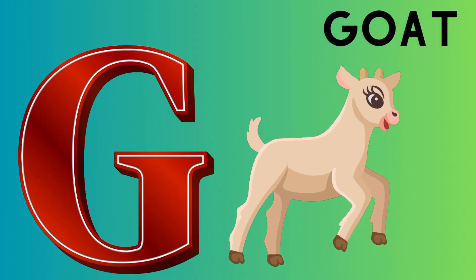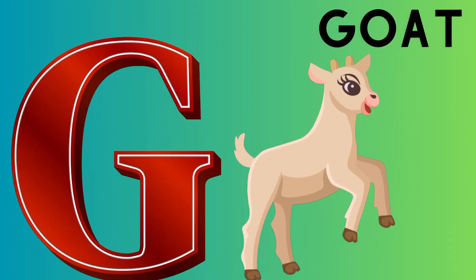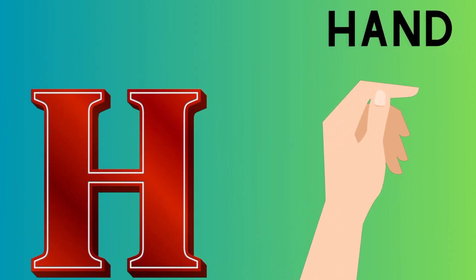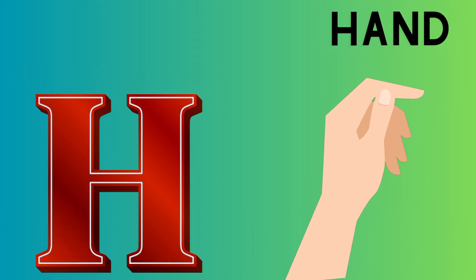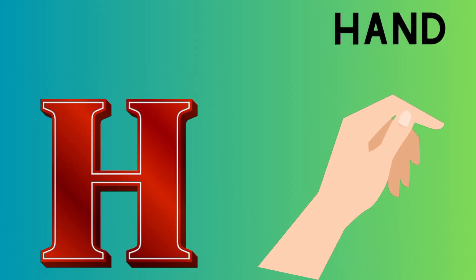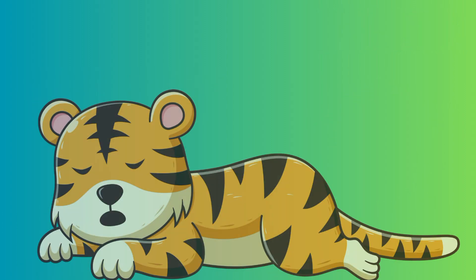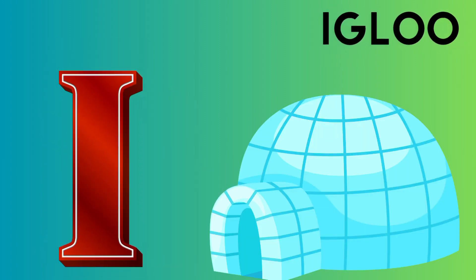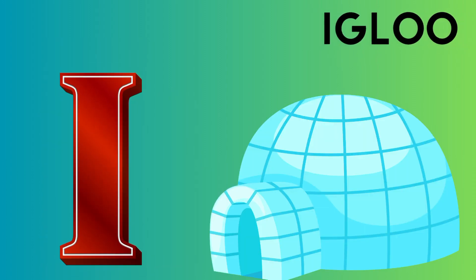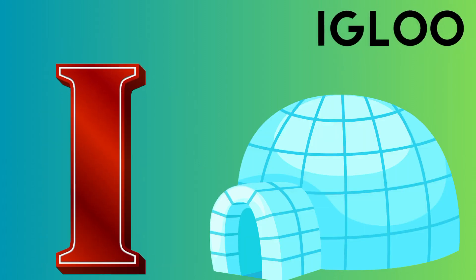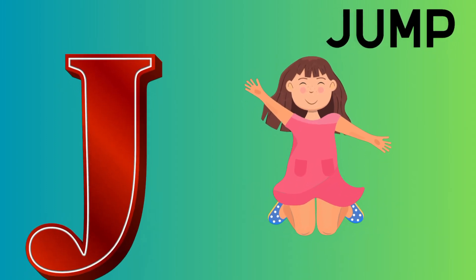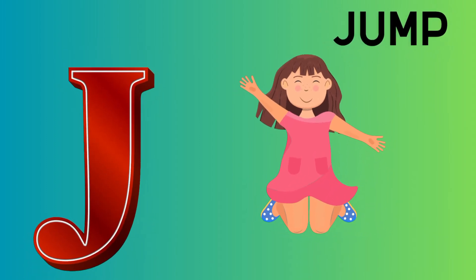G is for goat, g-g-goat. H is for hand, h-h-hand. I is for igloo, i-i-igloo. J is for jump, j-j-jump.